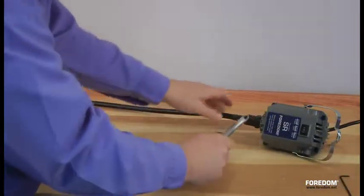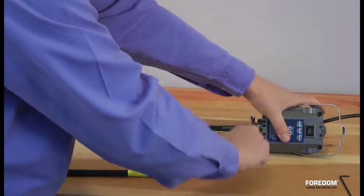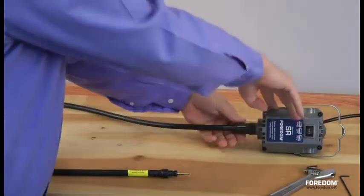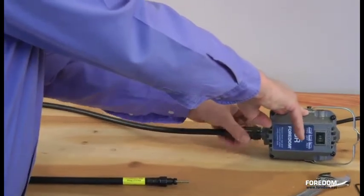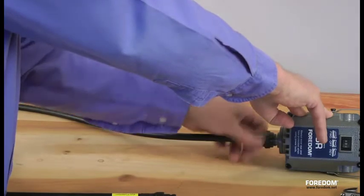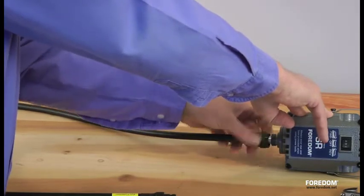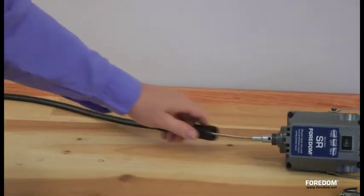Take your one inch wrench, put it on your sheath nut at the bottom of the motor. Remember it's a left-handed thread. Unscrew it. That exposes the inner shaft.